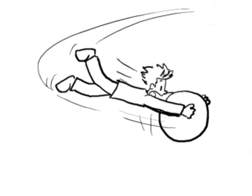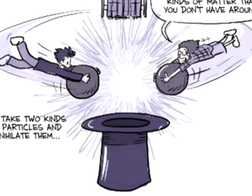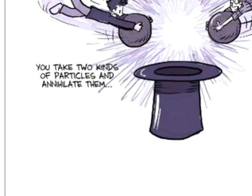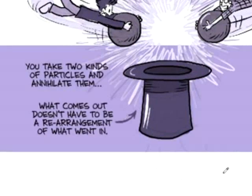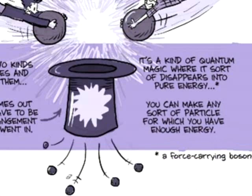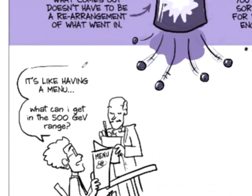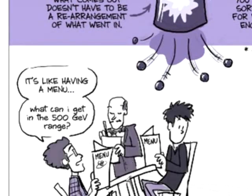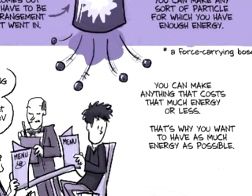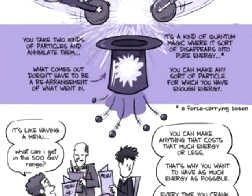The thing is, we have this collider. And the magic of a collider is you can make kinds of matter in a collider that you don't have around. You can take two kinds of particles and annihilate them. And it's not like what comes out has to be a rearrangement of what went in. It's this quantum magic where it sort of disappears. It's pure energy. And then you can make any sort of particle for which you have enough energy. It's like you have a menu. You go to the restaurant, you have a menu. I have this much energy so I can make anything that costs that much energy or less. So that's why you want to have as much energy as possible. And every time you crank up the energy, you could be exploring a whole new energy range, a whole new regime.